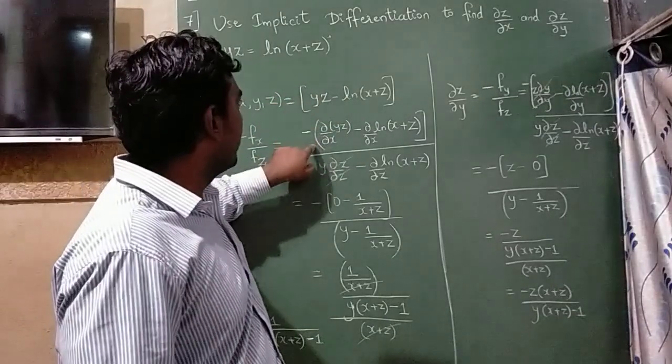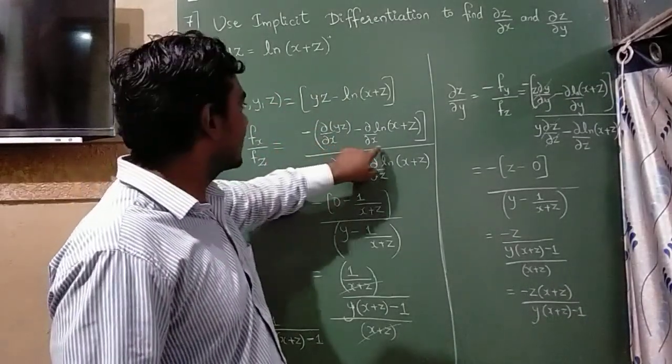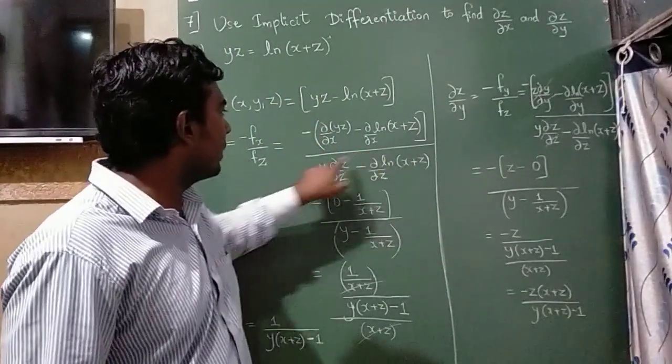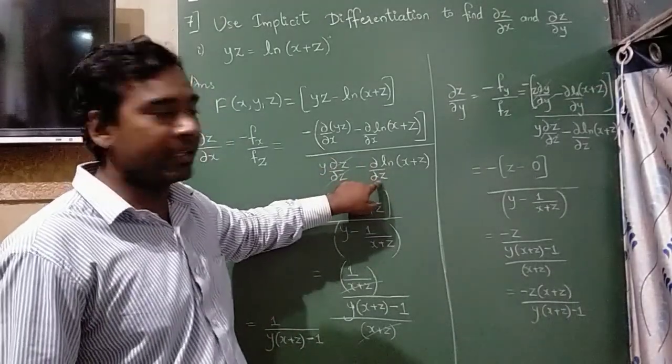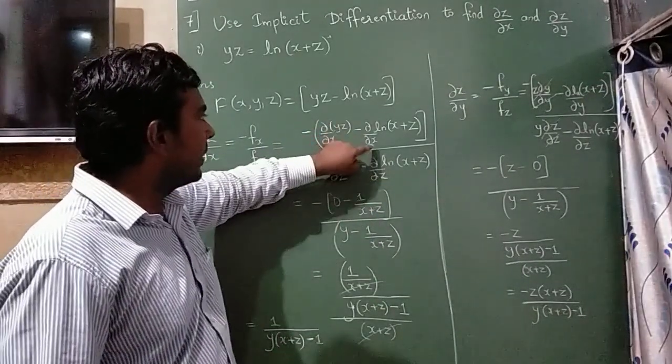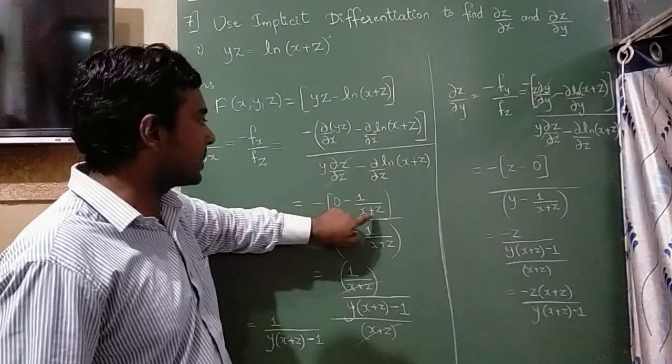So if I differentiate numerator part with respect to x and denominator part with respect to z, this will become constant 0 and d by dx of log is 1 by x plus z.